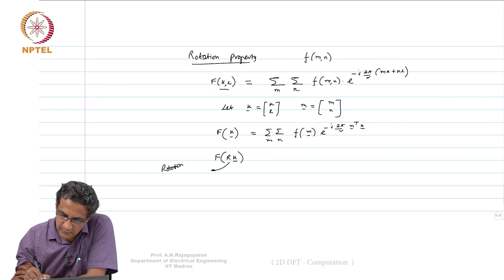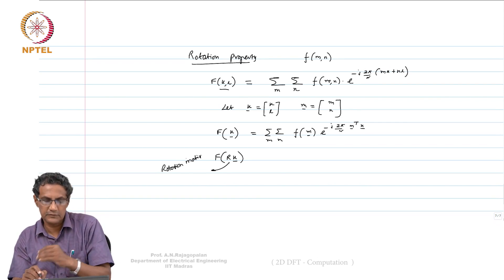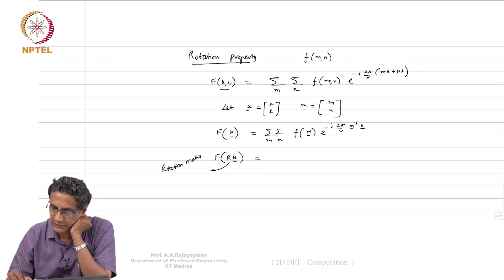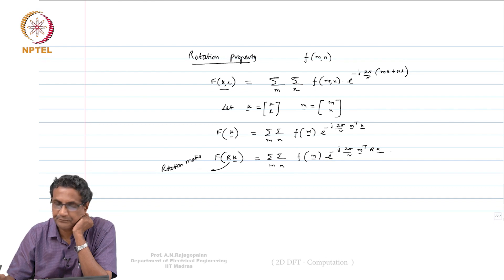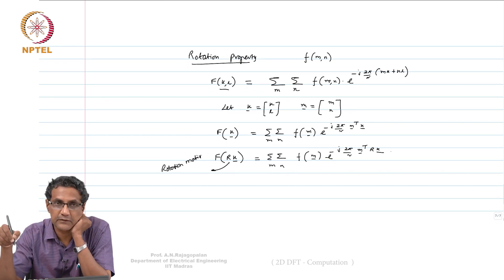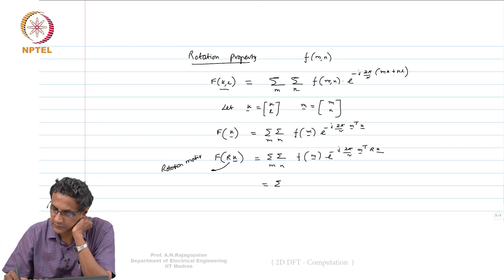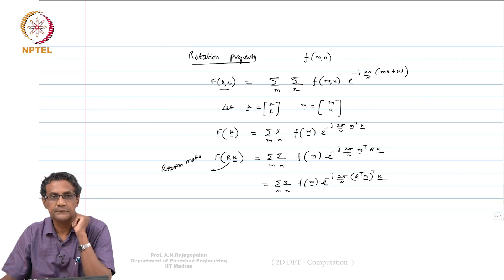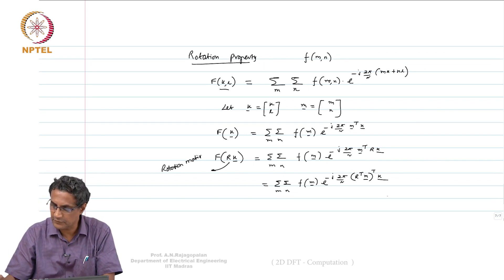So we can write F(k) as the summation over MN of f(m) times e raised to minus j 2 pi over N times m-transpose k, since MK plus NL equals m-transpose k. Now if we replace k by Rk where R is a rotation matrix — like cos-sin / minus-sin-cos — this gives a summation over MN of f(m) times e raised to minus j 2 pi over N times m-transpose R-transpose, which I can rewrite as R-transpose m, the whole transpose, times k.